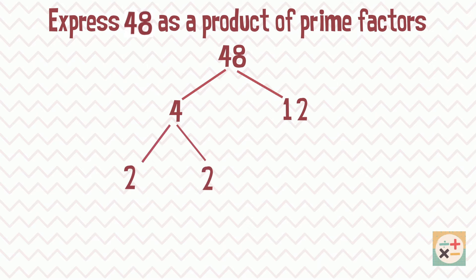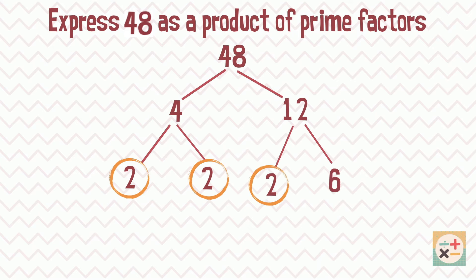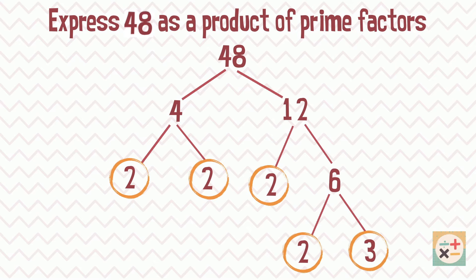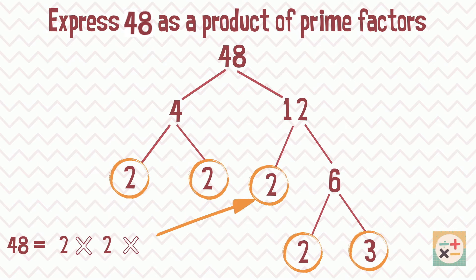Now repeat this for each of these factors. When we can't divide the factors any further, we circle it, as it is a prime number and therefore a prime factor. Once we cannot go any further with any of the branches, we have completed the factor tree and found all of the prime factors.